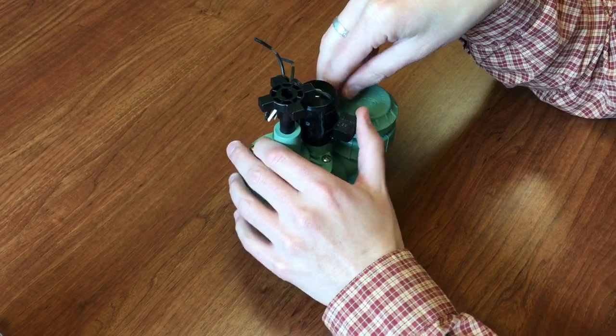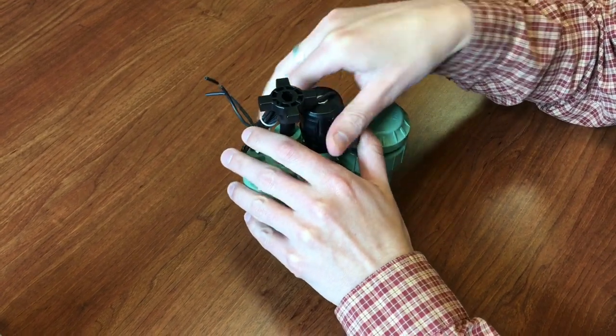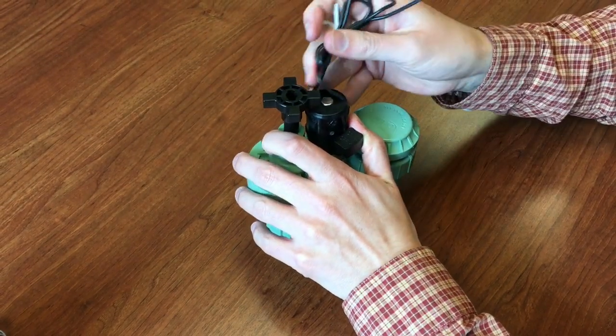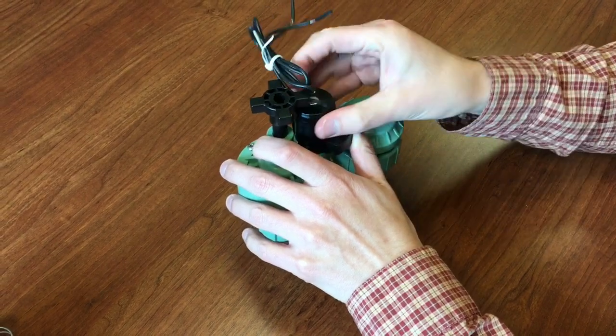So what you do is you hold this with your thumb, hold this flow control lever, and then just unscrew the solenoid and get that off of there.